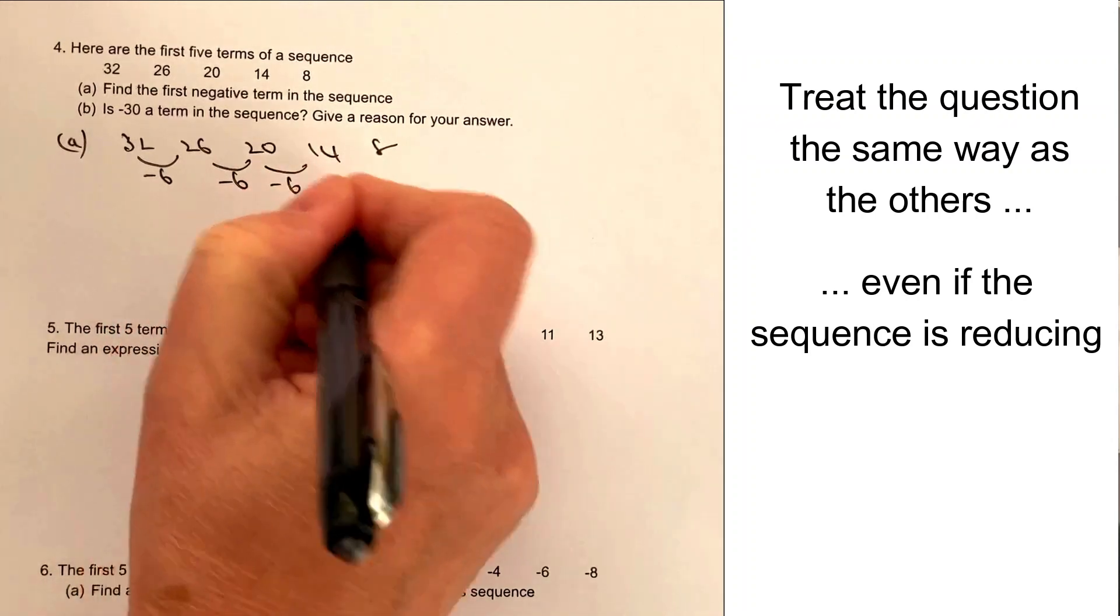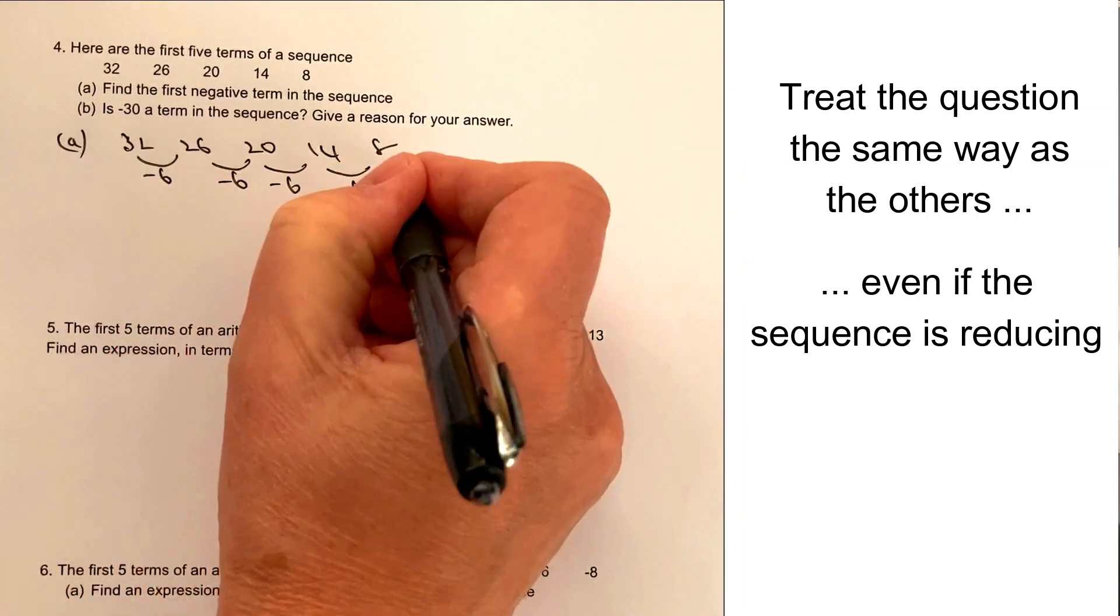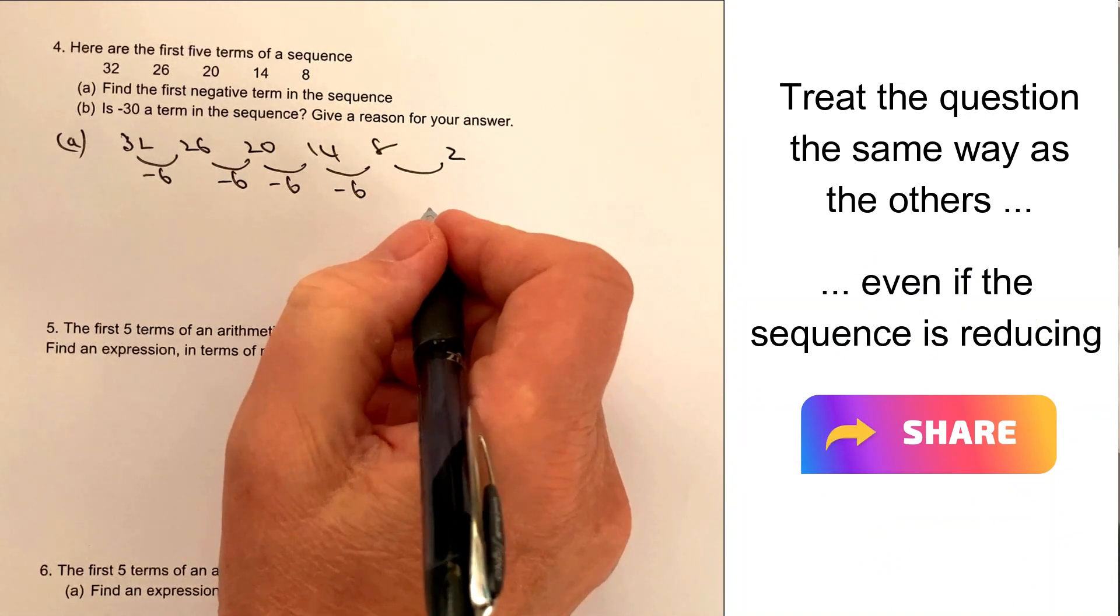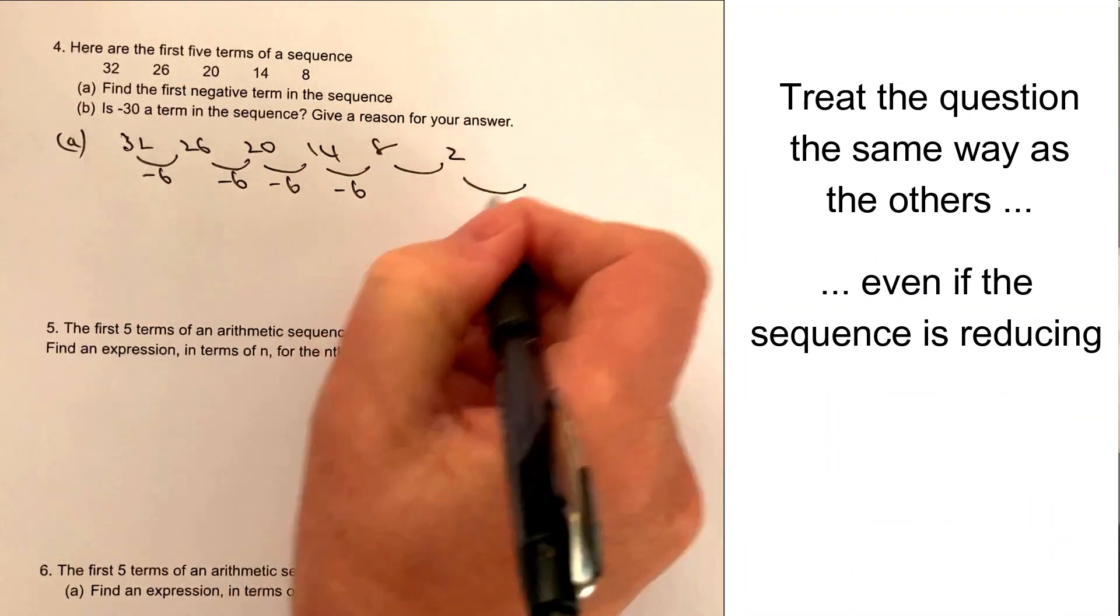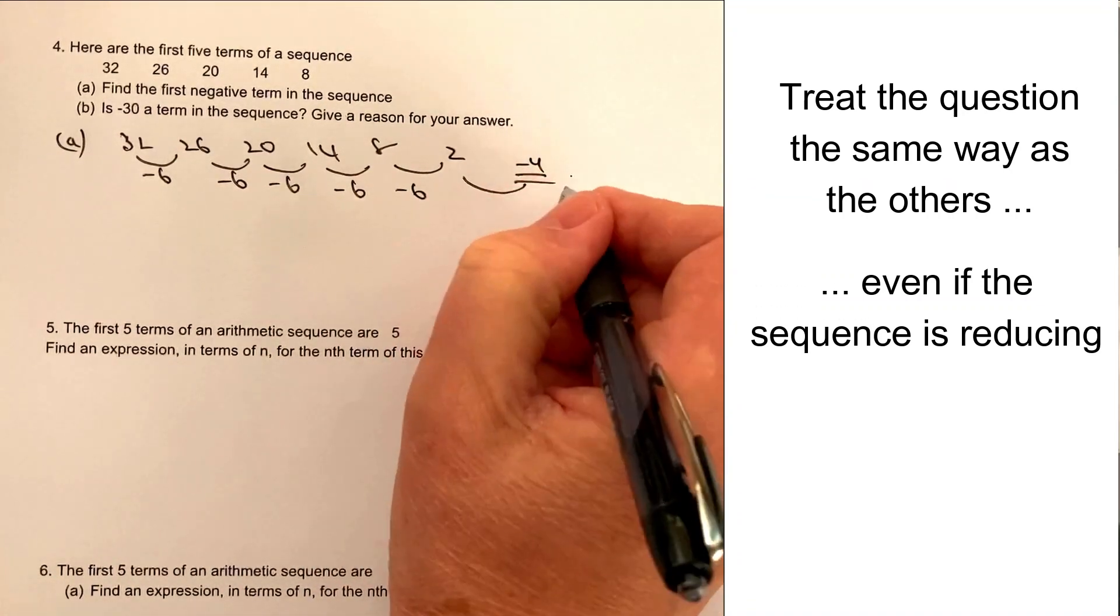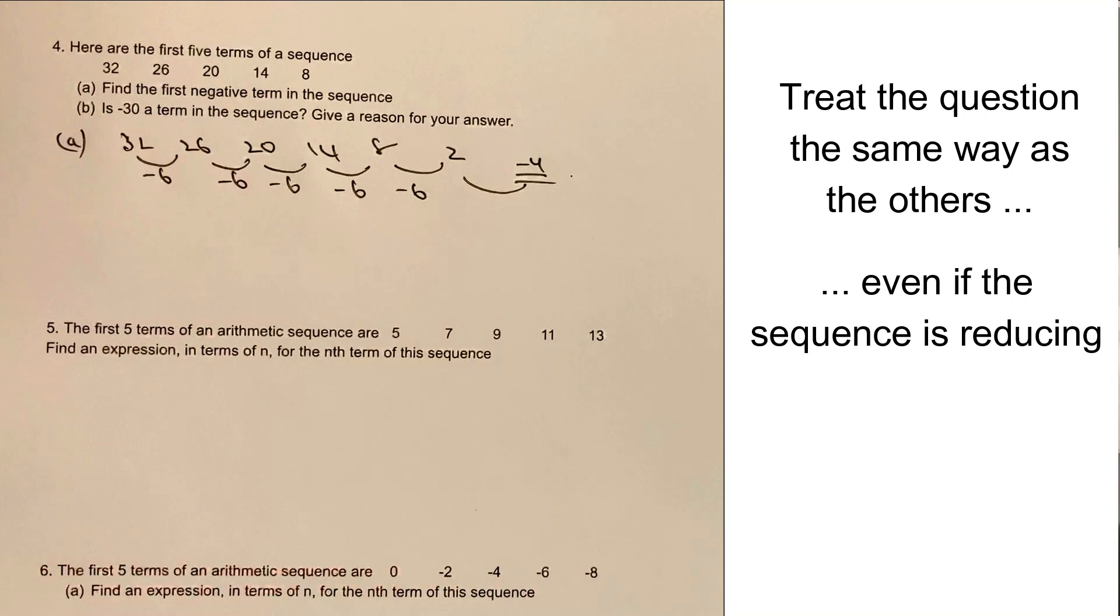So the next one, if we reduce it by 6, is going to be 2. And then the next one after that, if we reduce it by a further 6, is going to be minus 4. So the first negative term would be minus 4.